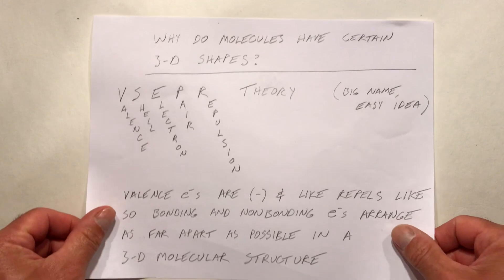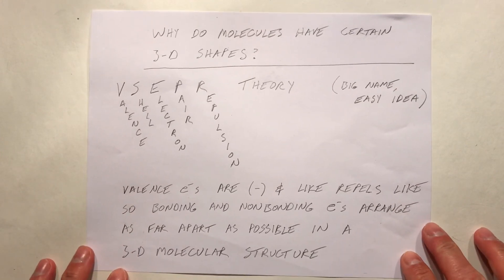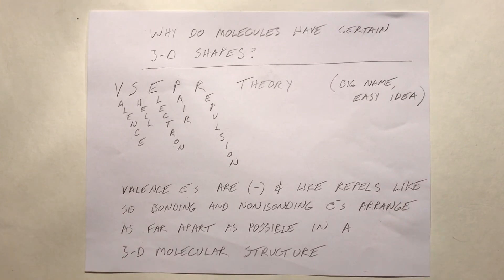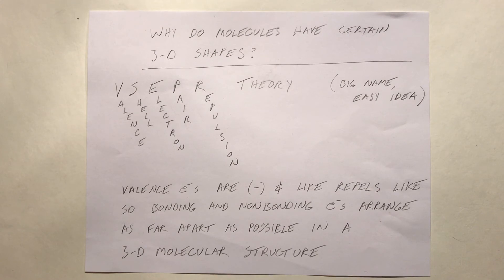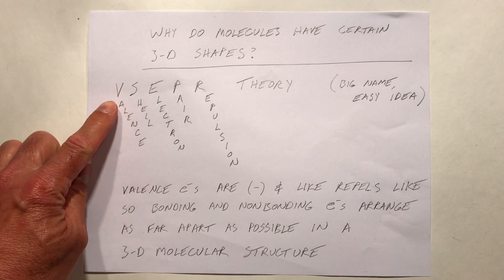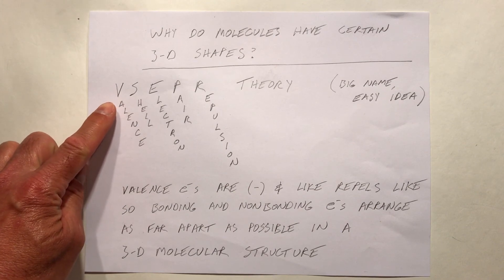We don't have to get too involved with three-dimensional structures other than to understand they really do exist and affect the polarity of molecules — it's not just about bond polarity. So why do molecules have these certain three-dimensional shapes? Whenever you answer the question 'why' in science, that would be a theory. Our theory for that is VSEPR theory.